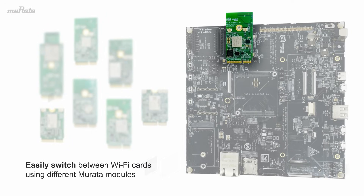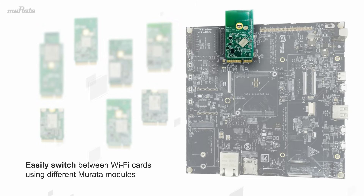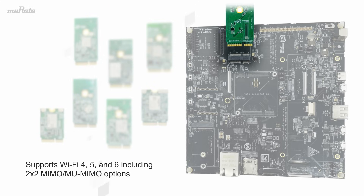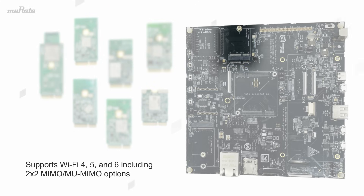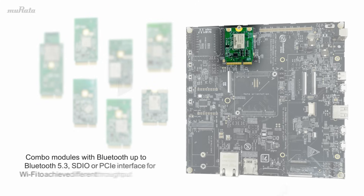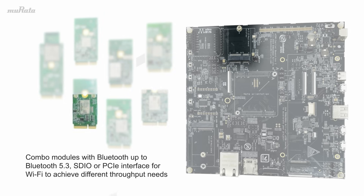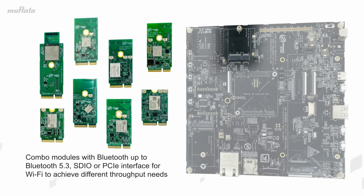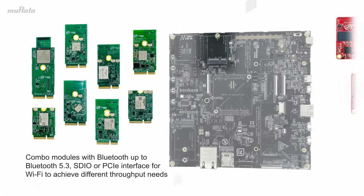The CrossConnect platform includes an M.2 slot to easily switch between different Wi-Fi cards based on Murata Wi-Fi modules. This provides engineers with access to Wi-Fi 4, 5, and 6, including 2x2 MIMO and MU-MIMO options. Wi-Fi plus Bluetooth modules are also available with up to Bluetooth 5.3, and they include options for SDIO or PCIe interfaces.